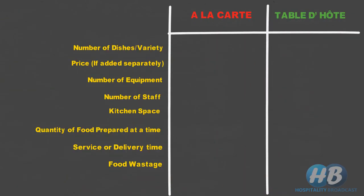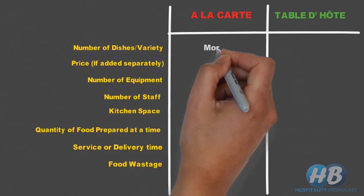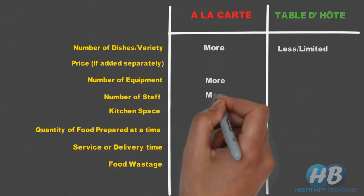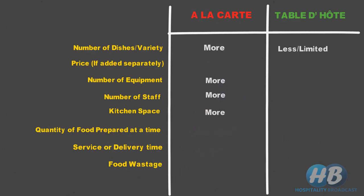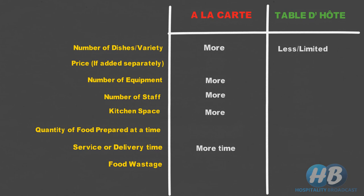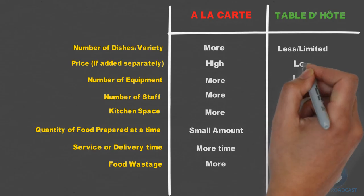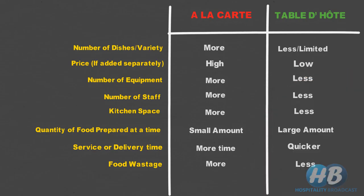Based on number of dishes, à la carte has more options and varieties as compared to table d'hôte. As there are more varieties in à la carte, more kitchen equipment, space, and staff are also required. It also increases food service delivery time and food wastage. In à la carte, food is also prepared in small quantity which also increases the price as compared to table d'hôte.